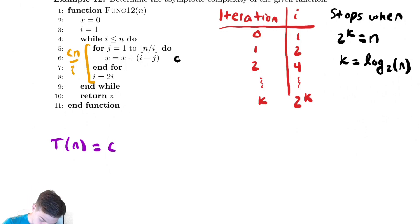The first value of i is 1, so it's cn plus cn over 2. That's the next value of i. Plus cn over 4, plus all the way down until the last value of i, which is n.